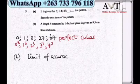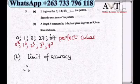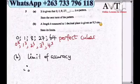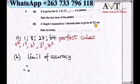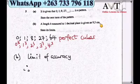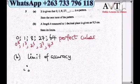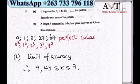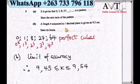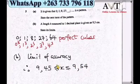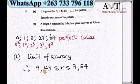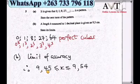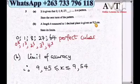Part B: a length measured to 1 decimal place is given as 9.5 centimeters. The minimum value we can round to 9.5 is 9.45, and the maximum is 9.54. So the limits of accuracy are 9.45 ≤ x ≤ 9.54. Any number in this range can be rounded to 9.5.